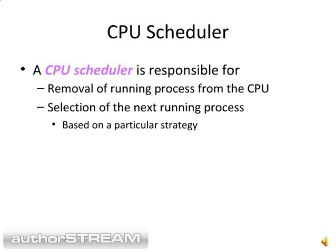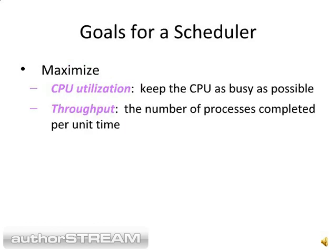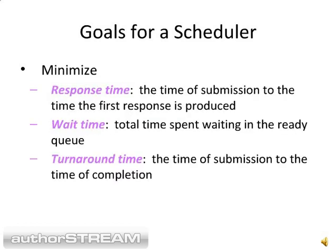We will be learning the scheduling strategies, but first let's see what the goals for the scheduler are. The goal of a scheduler is to maximize CPU utilization — that is, keep the CPU as busy as possible — and to maximize throughput, which means the number of processes completed per unit time.